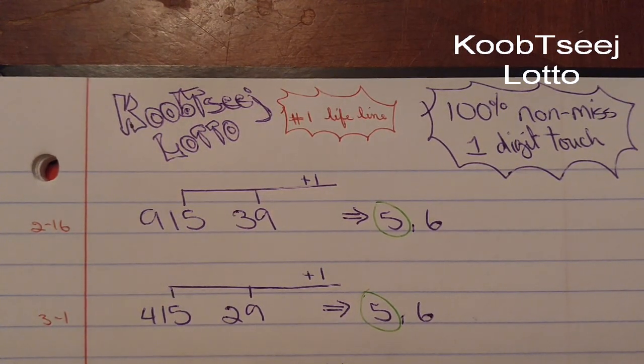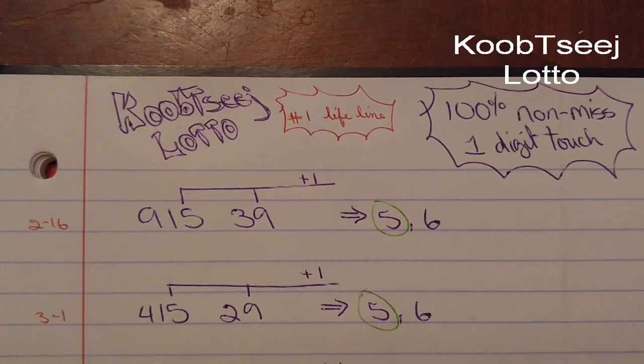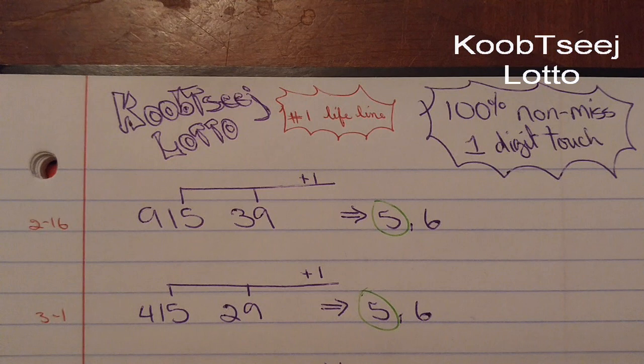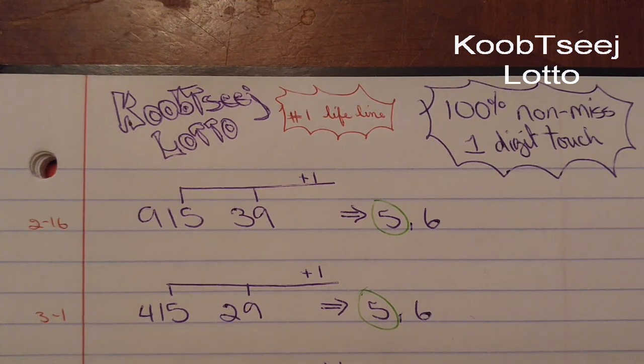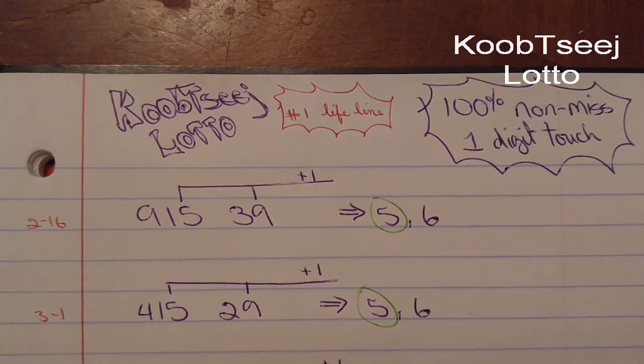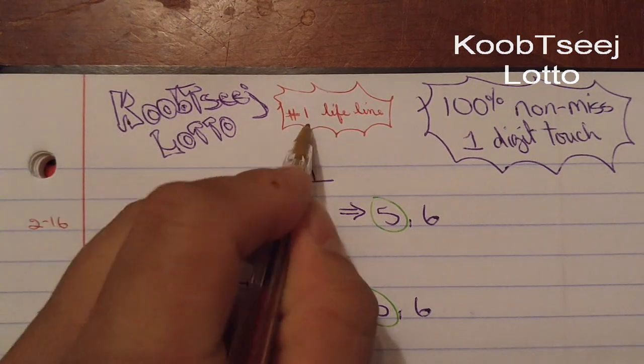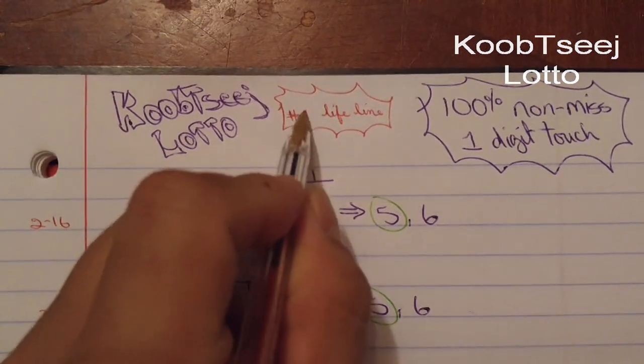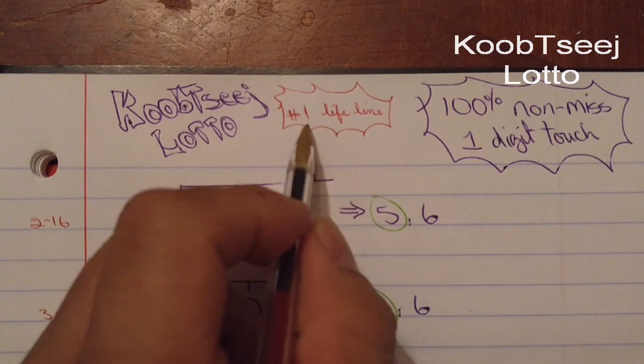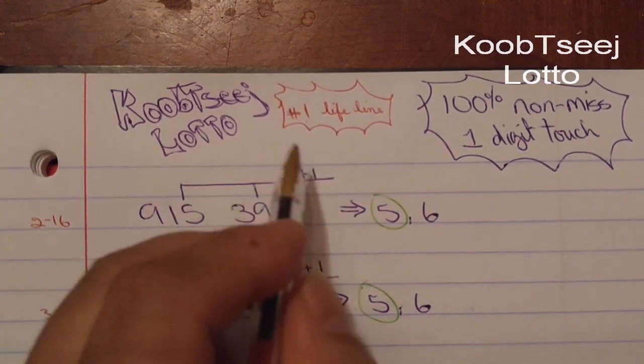So like this video. If you guys have one digit touch, we will use the formula. We will use the one, basically the number one here as the lifeline, so we will just add it right here.